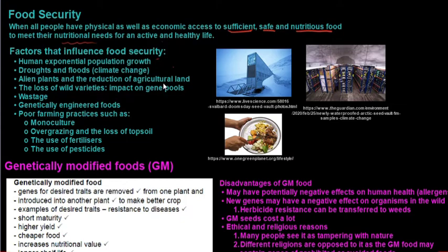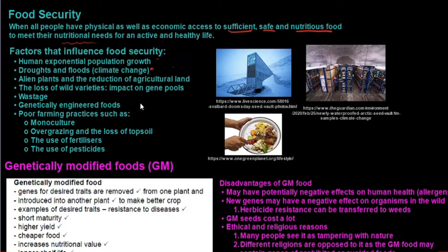Human population growth is putting strain on the world's food supply, and the demand for food will eventually be too great to meet. Droughts and floods from climate change affect food production — droughts increase the risk of crop failure and death of livestock, while floods wash away valuable topsoil, causing nutrient loss and soil erosion. The loss of wild varieties, reduction of agricultural land, and food wastage are also factors.